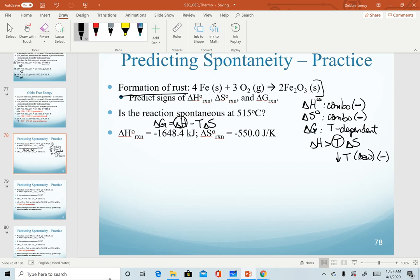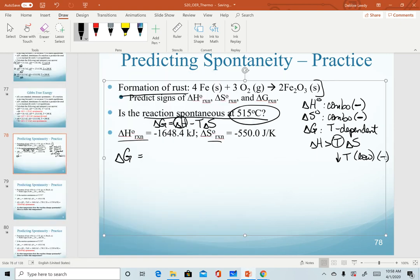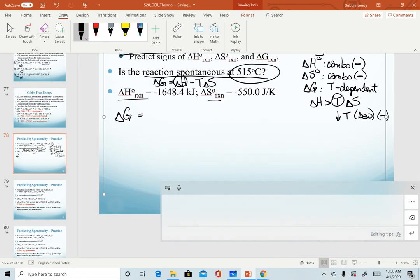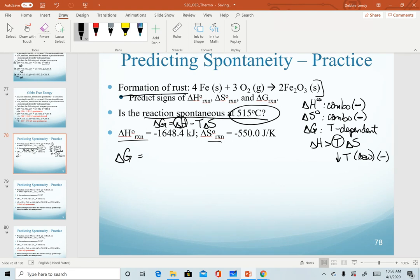For our question, we're asked, is the reaction spontaneous at 515 degrees Celsius? We are given our enthalpy and entropy values here. But again, recognize because our temperature is non-standard, we are calculating our non-standard value of delta G.